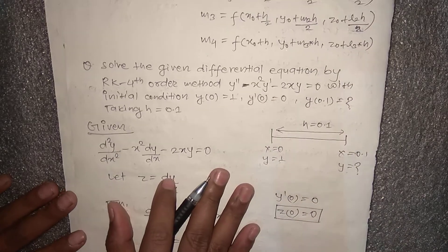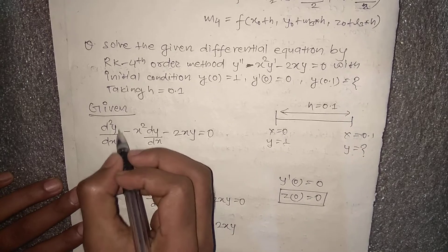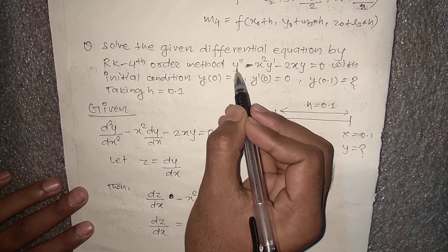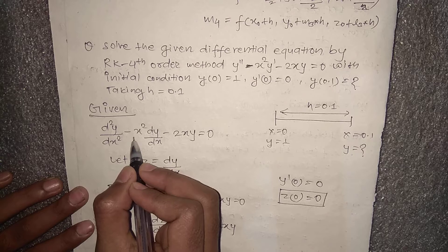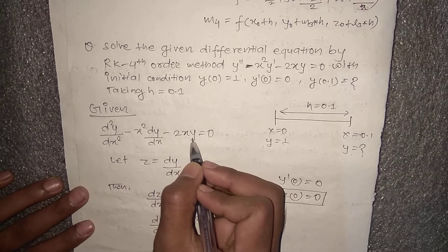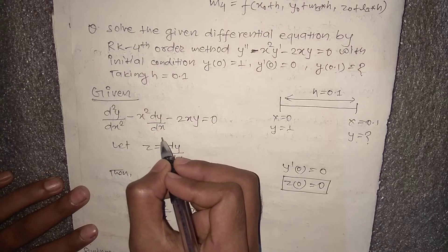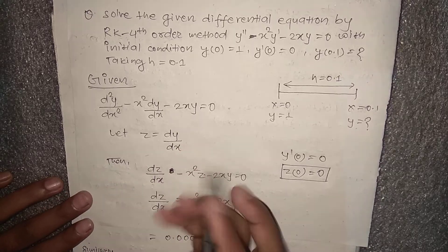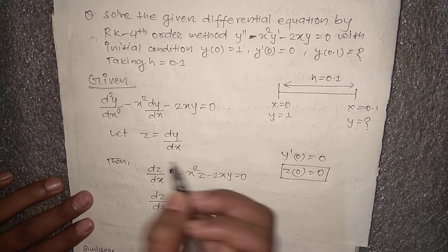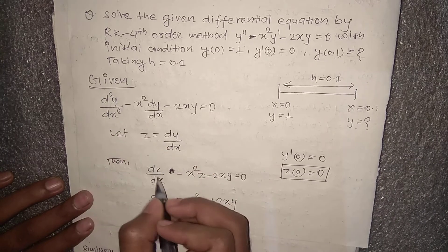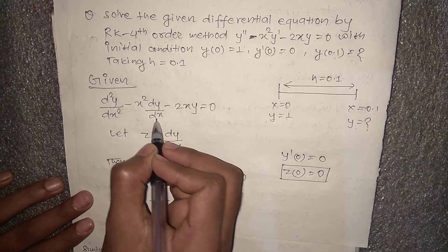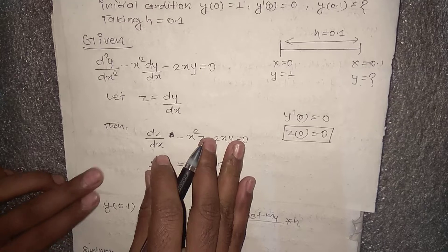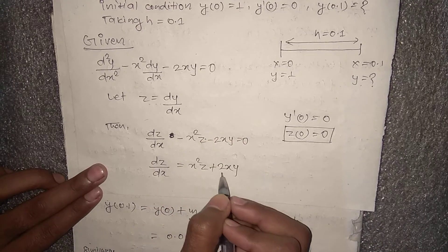Since we have a second order differential equation, y'' = x²·y' − 2x·y, we reduce it to a system of first order equations. Let z = dy/dx, so d²y/dx² = dz/dx. Substituting, we get dz/dx = x²·z + 2x·y. This converts the problem into two first order ODEs.